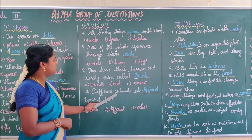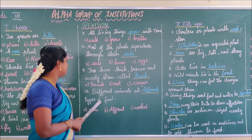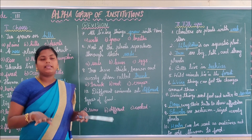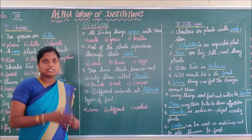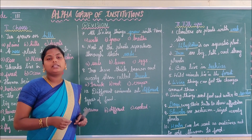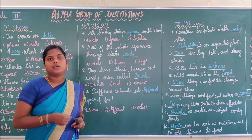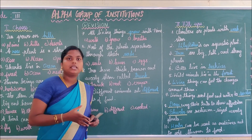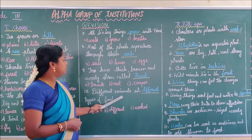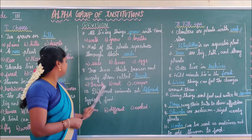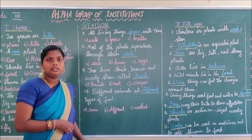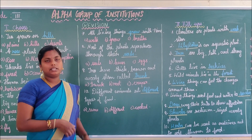Last question in this section: Different animals eat blank types of food. Not everyone likes all types of food. Different animals eat different types of food. Is it clear, children? Shall we move to the next part?